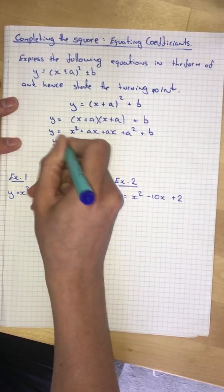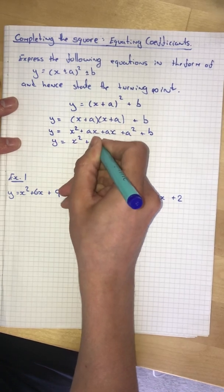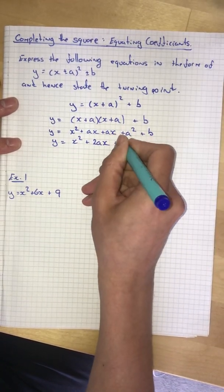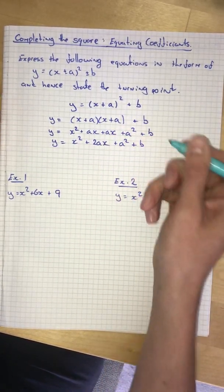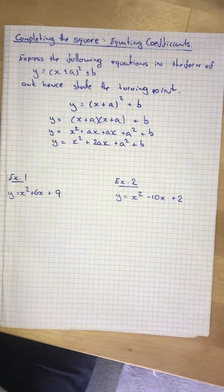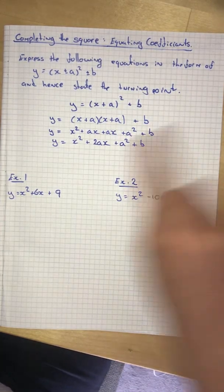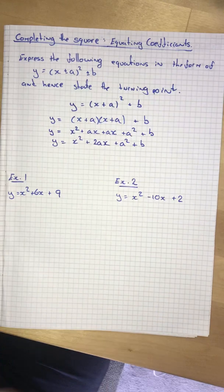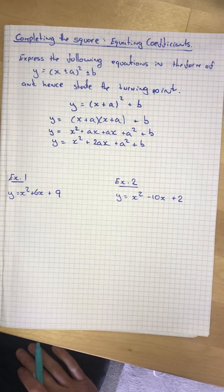And then if we simplify that we'd get x squared plus 2ax plus a squared plus b. It looks really complicated. But that's just a general equation of any broken out complete square form quadratic.